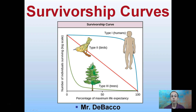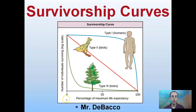This is a brief description of the three survivorship curves. We can see them evident here: type 1, type 2, and type 3. Type 1 is exhibited by humans, type 2 typically by birds, and type 3 by trees. We're looking at the percentage of maximum life expectancy and number of individuals surviving, based on a log scale.